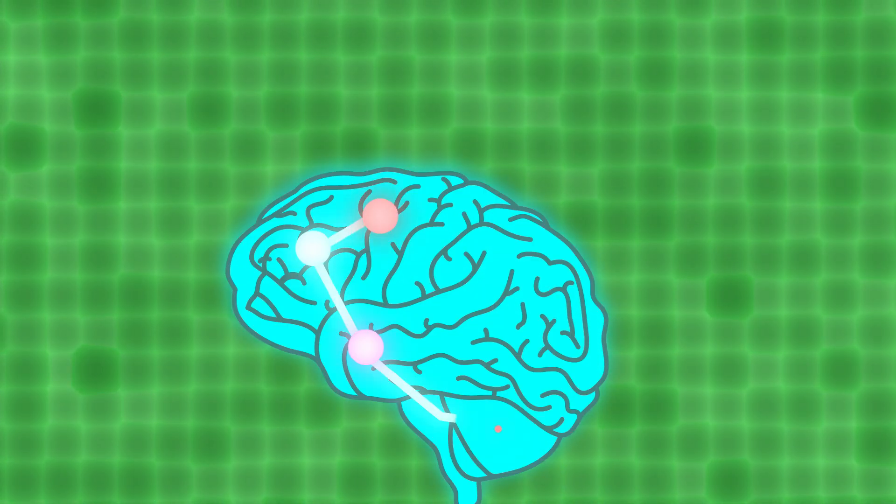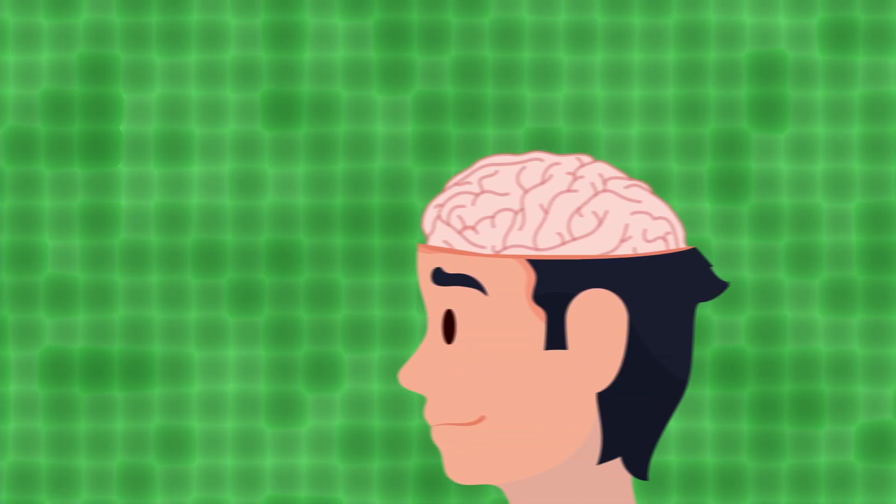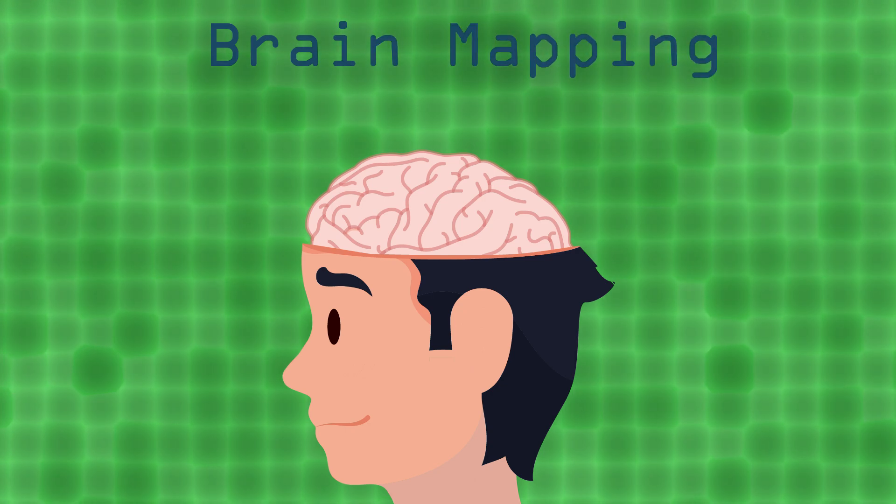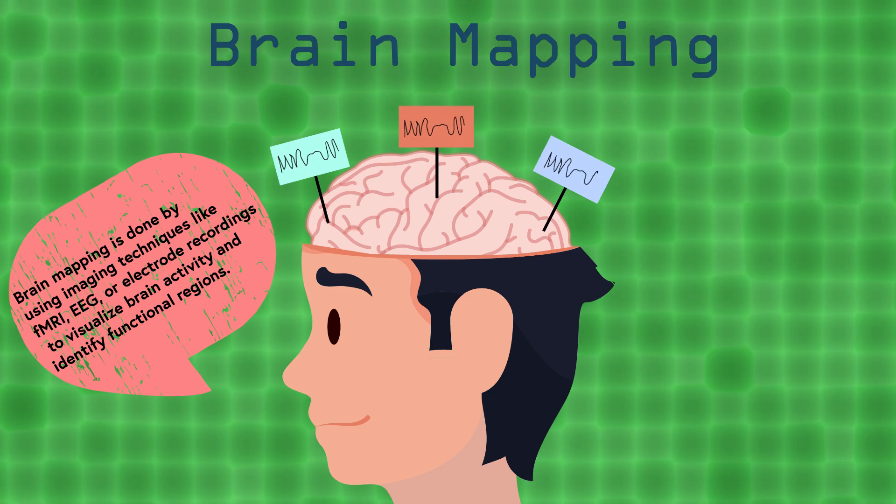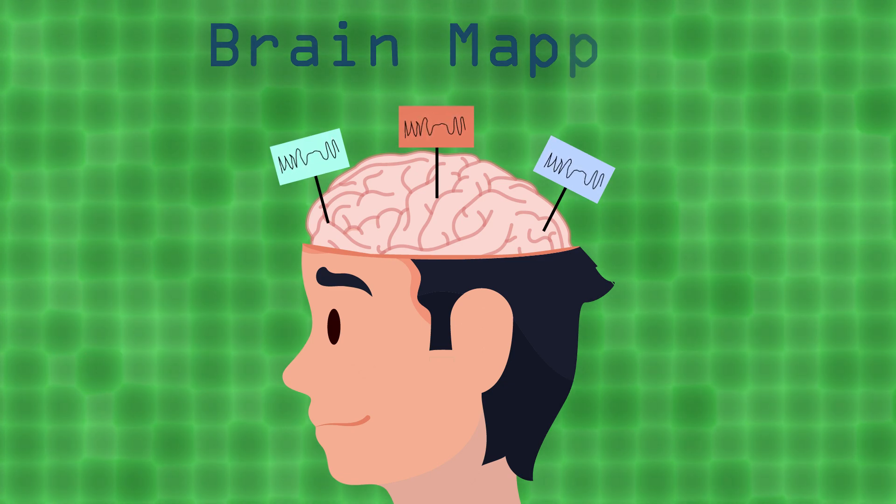Over the past few decades, we've made tremendous strides in understanding how these neural networks work on a large scale. One of the most significant advances is in brain mapping, the process of creating detailed representation of the brain's structure and activity, focusing on neural connections, regions, and their roles in cognition and behavior.